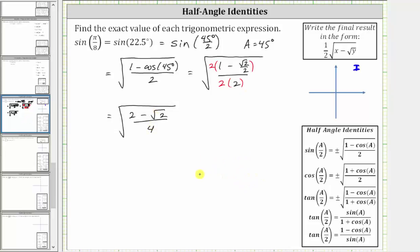For the next step, let's take the square root of the numerator and denominator. This is equal to the square root of two minus square root two divided by the square root of four. And the square root of four simplifies to two, which gives us the square root of two minus square root two all over two.